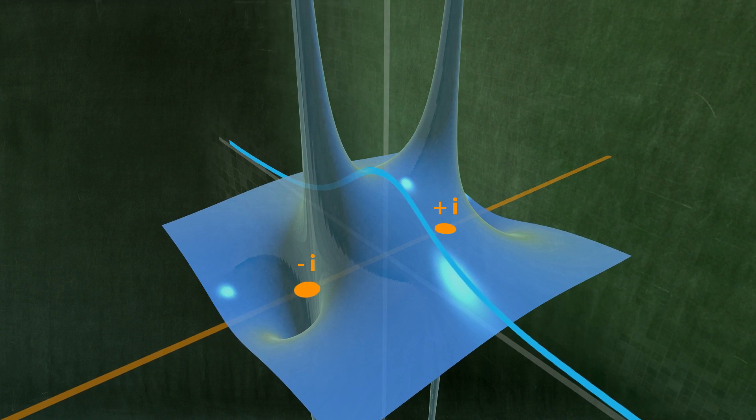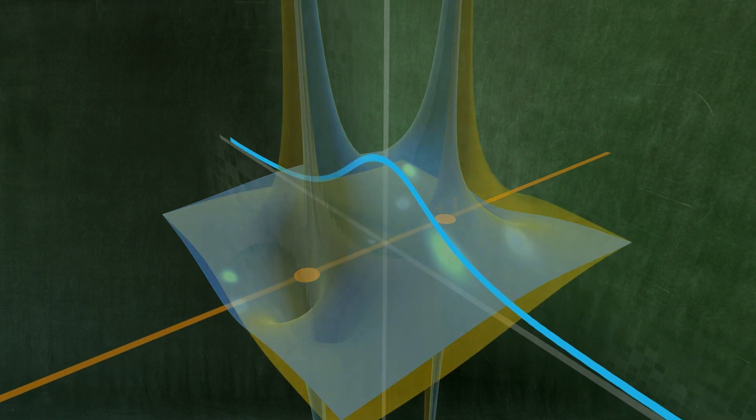Secondly, we display the imaginary part of f of x plus i y on the complex plane.